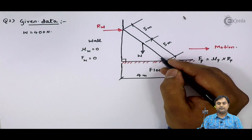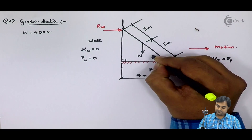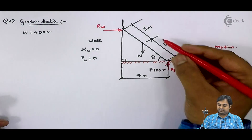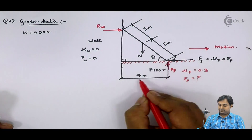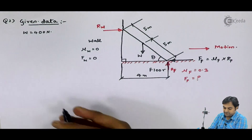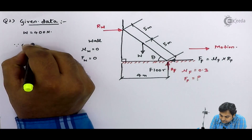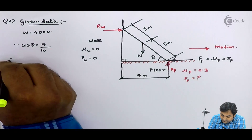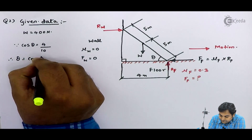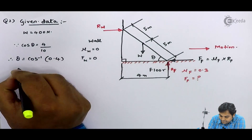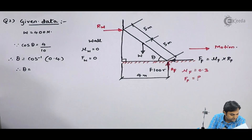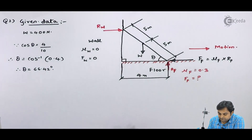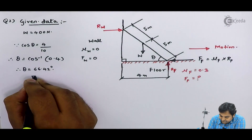First, we find the inclination of the ladder. Let theta be the angle with the floor. The hypotenuse is 10 and the adjacent side is 4, so cos theta = 4/10 = 0.4. Therefore theta = cos inverse of 0.4, which gives theta = 66.42 degrees. We need to calculate F_F.